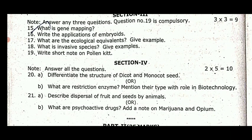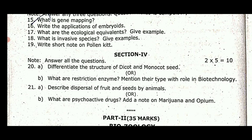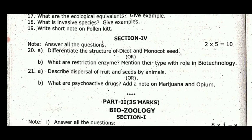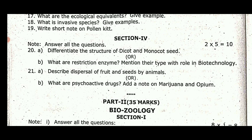Additional questions include: what are restriction enzymes; describe the dispersal of fruits and seeds by animals; what are psychoactive drugs — examples include marijuana and opium. There are 5 sets of question papers you can download and use for last-minute preparation. Share the video, subscribe to our YouTube channel, and press the bell icon. Thank you.